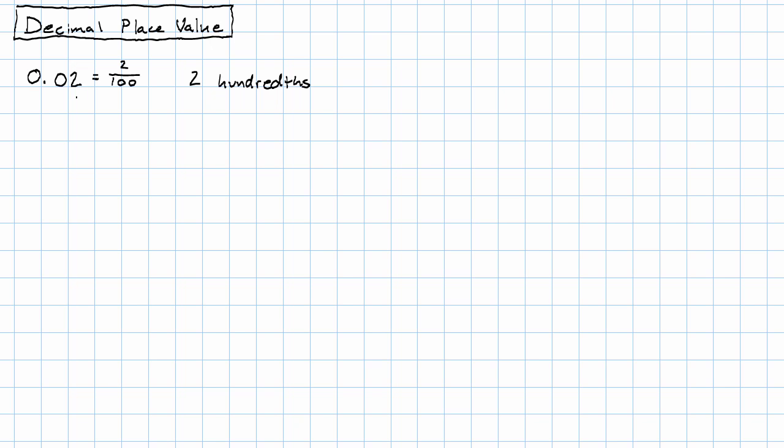It's pretty easy to see that there's nothing special about the two there. Any digit that I put in this place would indicate a number of hundredths. What about 0.4? That would be four, a one followed by one zero in the denominator, so four tenths.